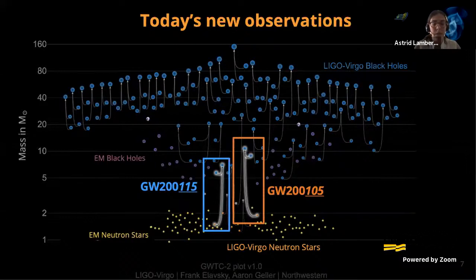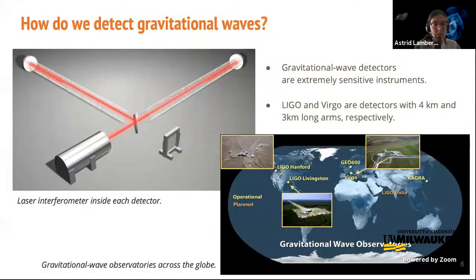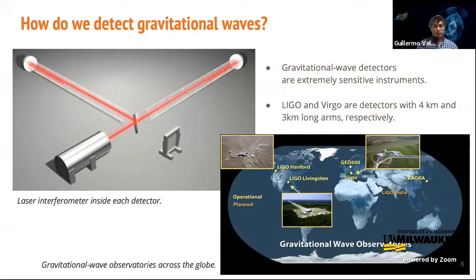I'm now handing the floor to Guillermo Valdez, who will explain how the detectors work to detect these events. The many gravitational wave detections Astrid talked about were made with the LIGO and Virgo gravitational wave detectors. Each detector is an interferometer with arms several kilometers long. The two LIGO detectors in Washington and Louisiana, and Virgo in northern Italy, are part of a large and growing worldwide network of gravitational wave observatories. These three detectors are currently the most sensitive of the network.